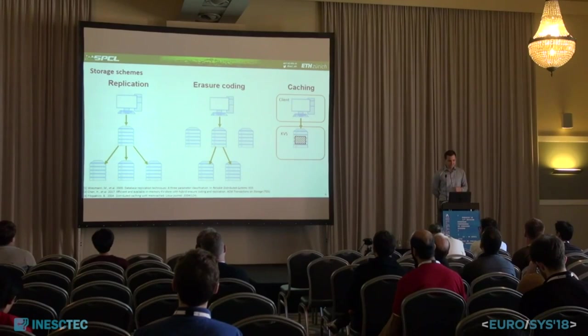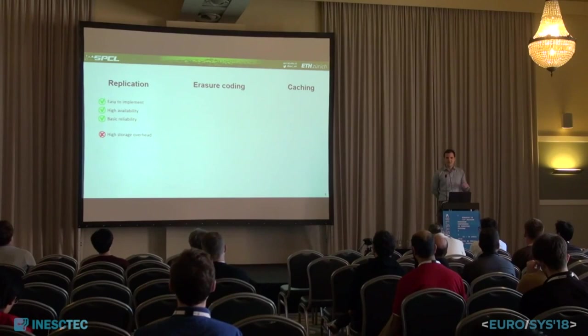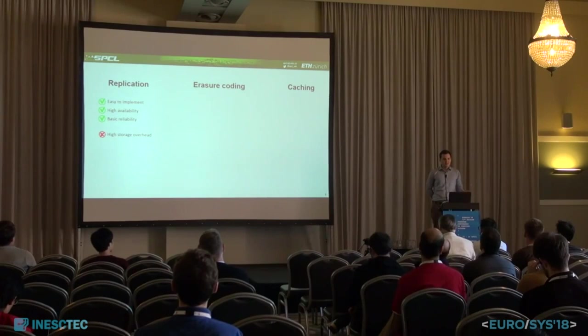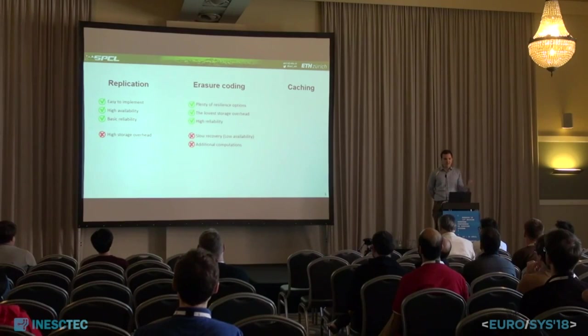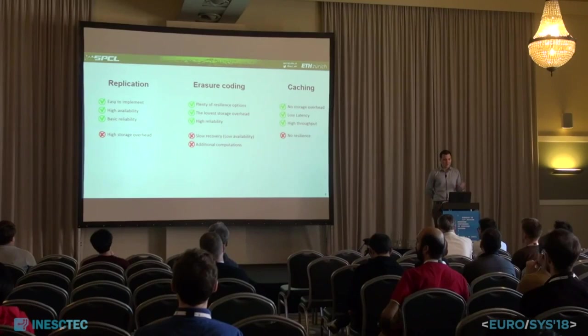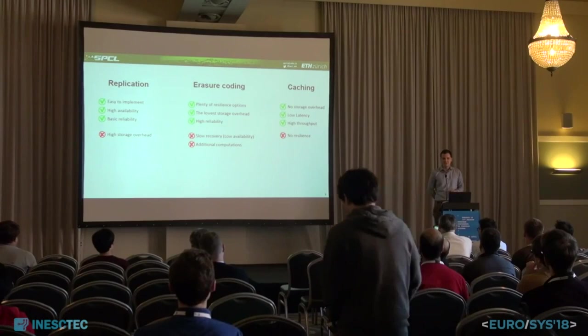Different storage schemes have different advantages and disadvantages. Replication is a simple scheme which provides a decent level of reliability and availability; however, it has really high storage overhead. On the other hand, Reed-Solomon codes provide the lowest possible storage overhead, but involve computation to generate, update, and recover data. Finally, caching is the fastest way to store data, but since there is no redundancy, it is not fault tolerant.